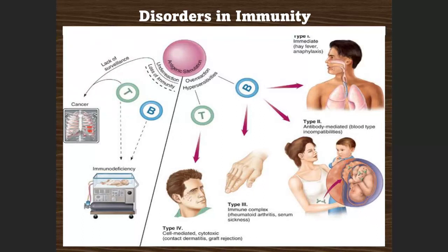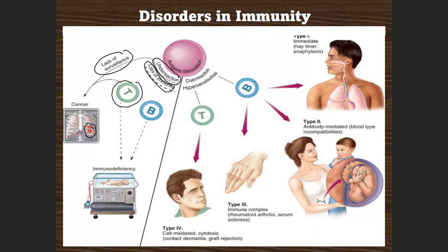Disorders in immunity are divided into two conditions. The first is underreaction, which may be caused by lack of surveillance — and if this happens, it usually causes cancer. The second is loss of immunity, maybe loss of T cells or B cells. If the body doesn't produce T cells or B cells, this is called immunodeficiency disease.